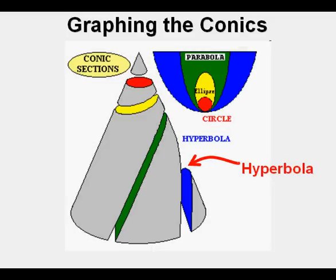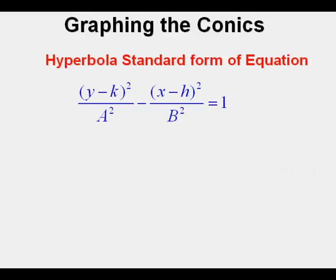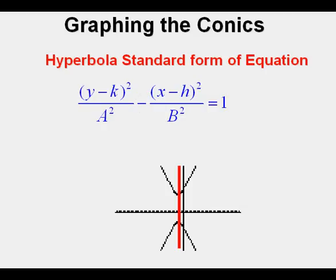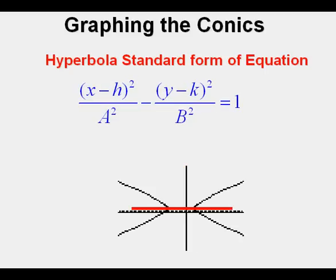A hyperbola is created by taking a vertical slice from a cone. The equation for a hyperbola looks very much like the equation for an ellipse, but with one key difference: in the standard form for a hyperbola there is a minus sign between the x squared and y squared terms, whereas the equation for an ellipse has a plus sign. When graphed, the y squared minus x squared form gives a hyperbola oriented with a vertical axis of symmetry, shown by the red line segment here. In the other form — x squared minus y squared — the hyperbola has a horizontal axis of symmetry, again shown by the red horizontal line segment.